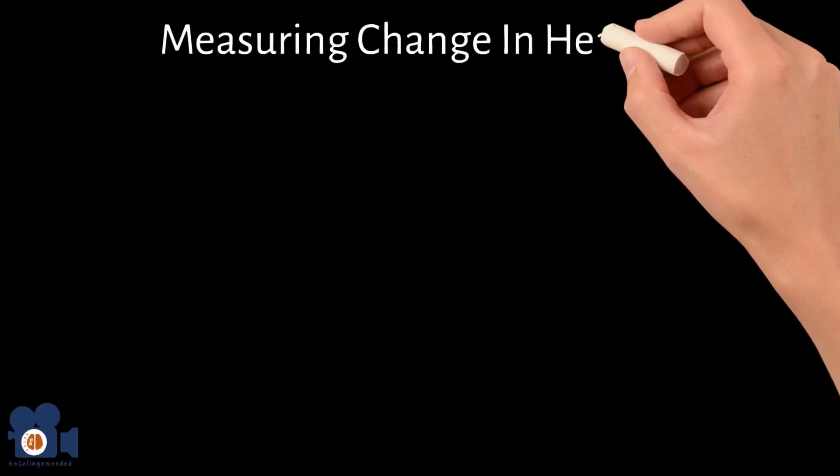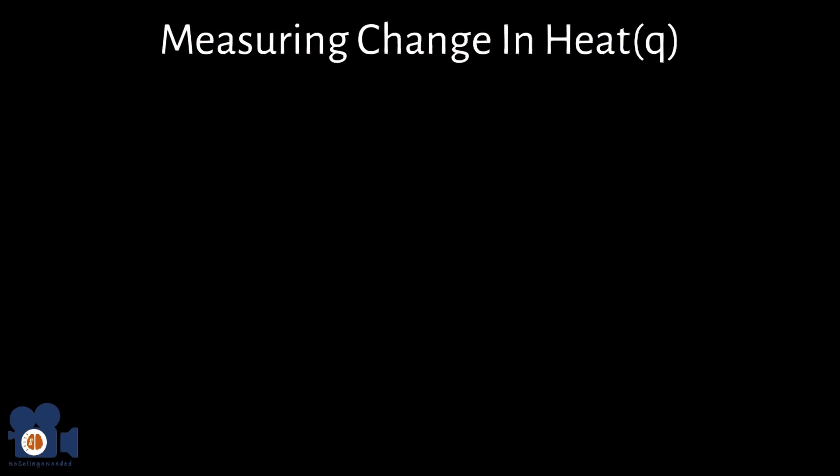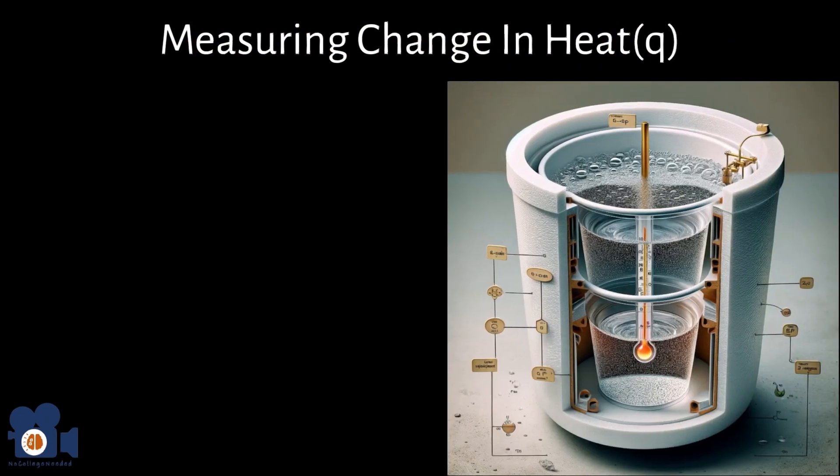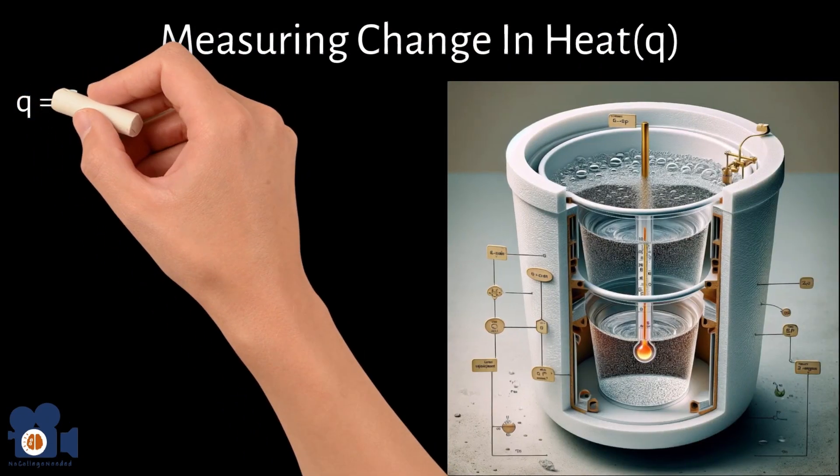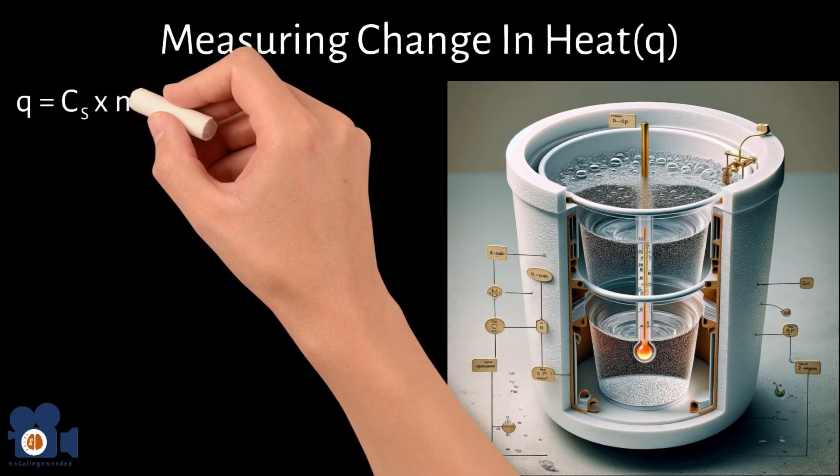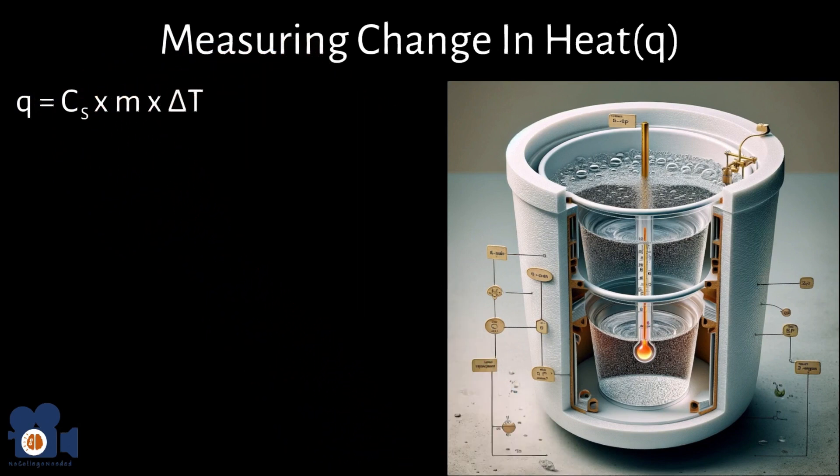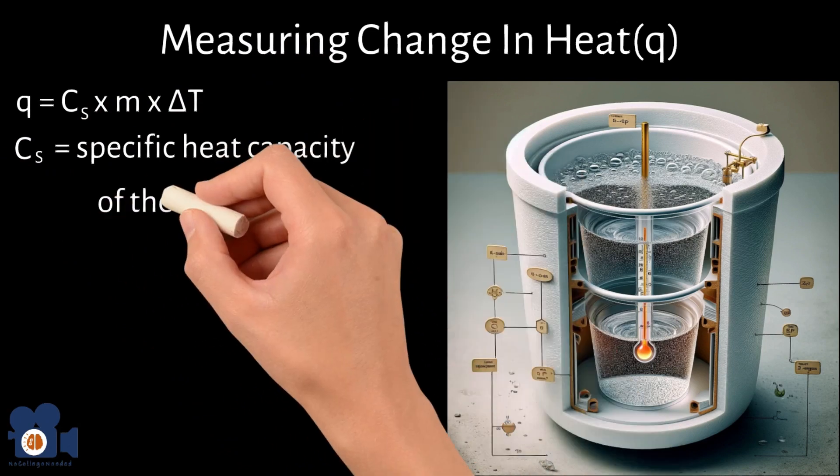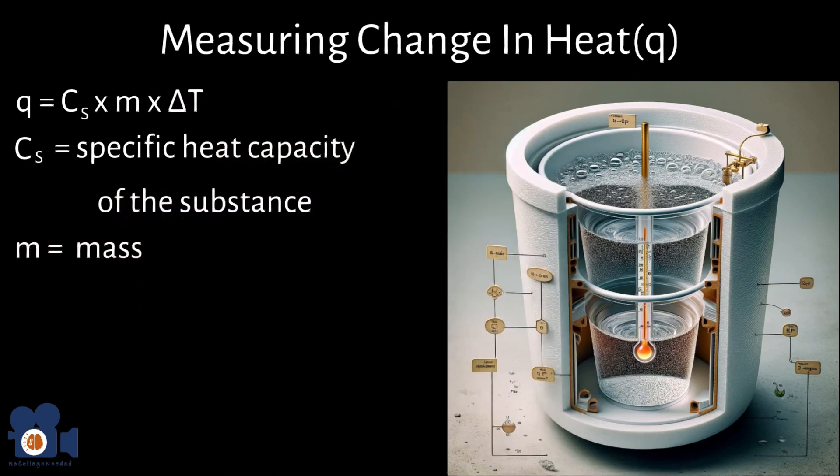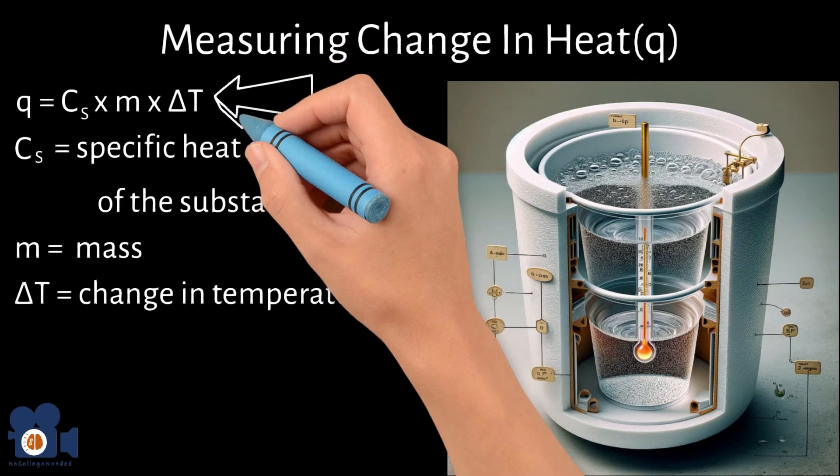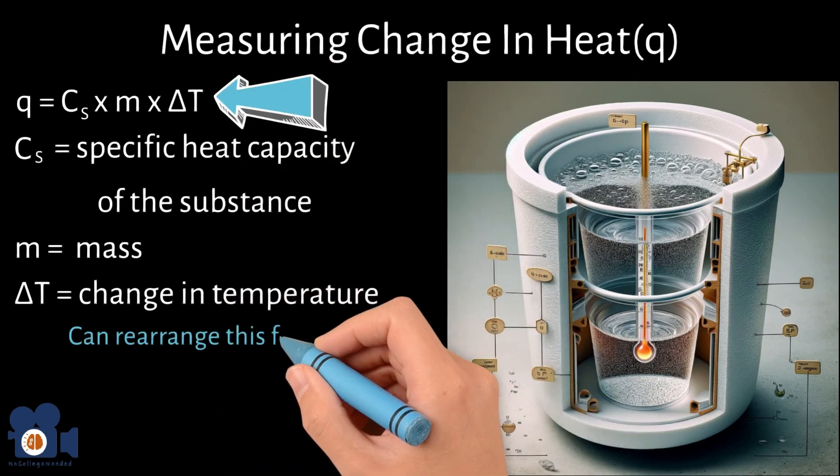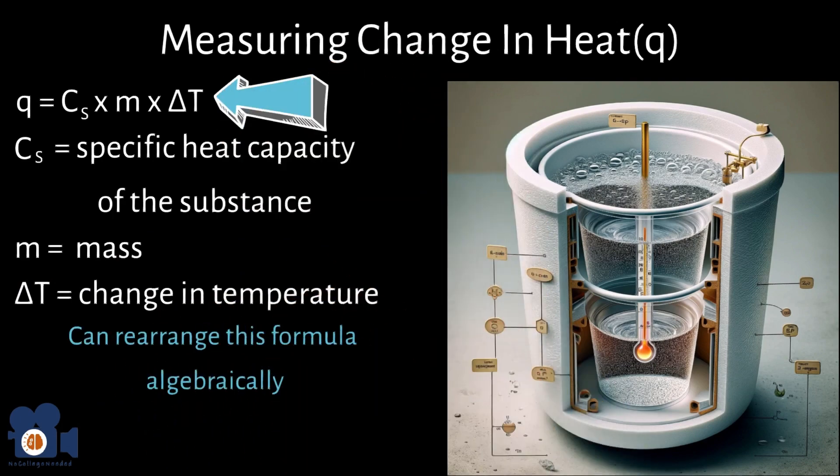To measure this change in heat, Q, of one gram of a substance at constant pressure, the coffee cup calorimetry, scientists use the formula Q equals Cs times M times delta T, where Cs is the specific heat capacity of the substance, M equals mass, and delta T equals the change in temperature. Keep in mind you can rearrange this formula algebraically for a chemistry experiment to solve for any of these values if they're unknown and you have the others.